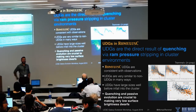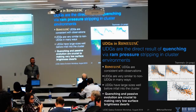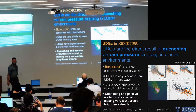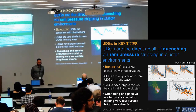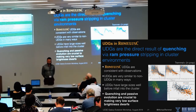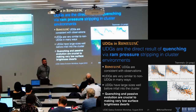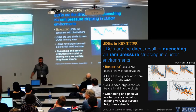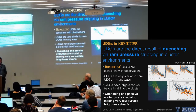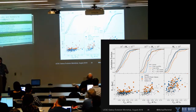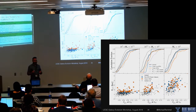Q: You pointed out that UDGs are larger even before falling into the cluster — why are they larger? You said there's no correlation with spin, but in the standard picture, galaxy sizes are correlated with spin and concentration of the halo. A: There's always going to be a distribution of sizes that doesn't inherently correlate with spin, and UDGs are the higher end of that distribution. But the dark matter spin doesn't tell the whole story — there is some evidence that the angular momentum of accreted gas is also important.